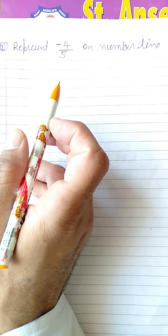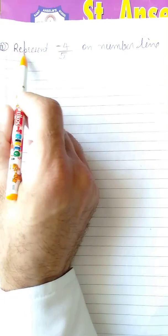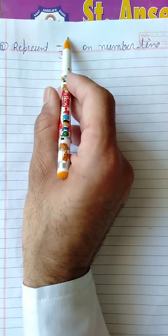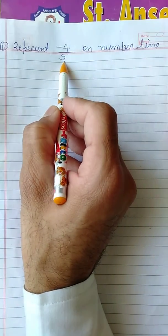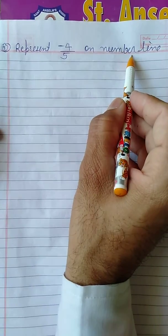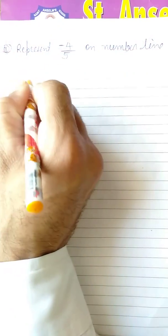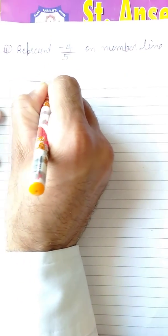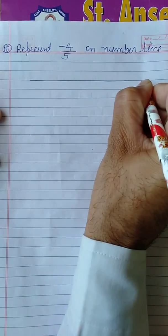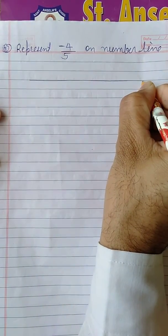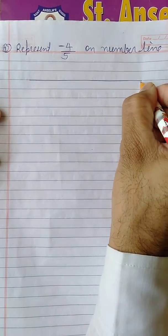After this topic, representation of rational number on number line - the rational number minus 4 upon 5 on number line. We have to represent how to represent, let's see. First of all we will draw a number line.